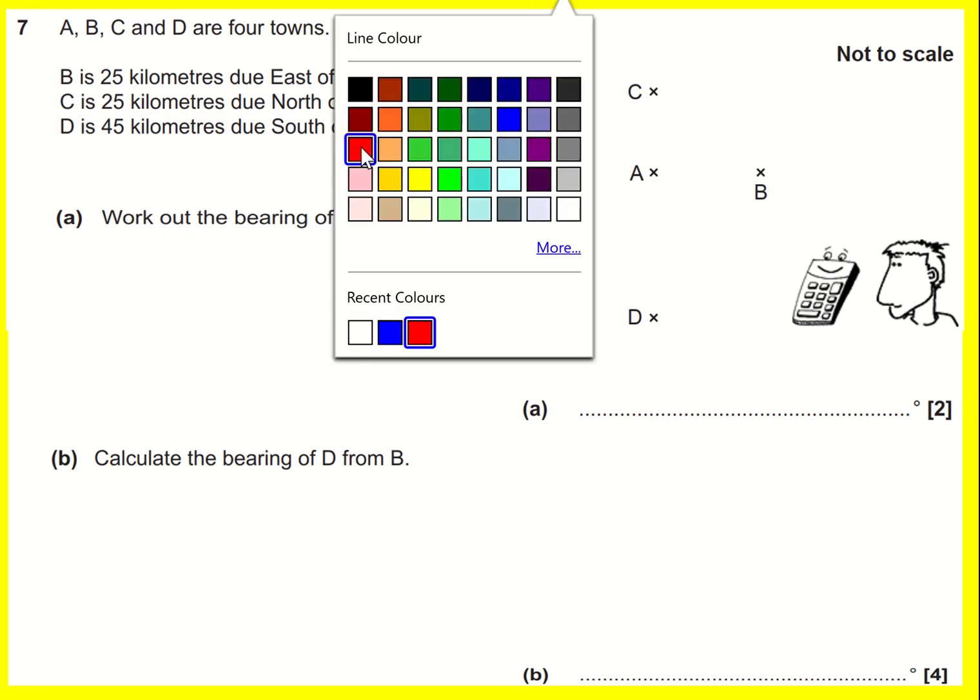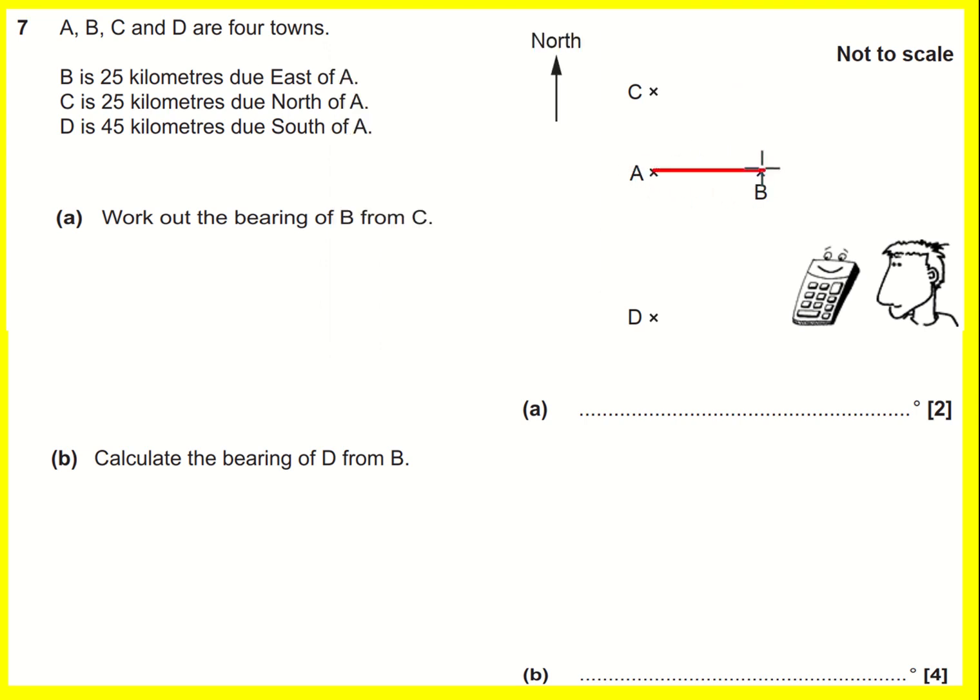The first thing I'm going to do is label the diagram a bit more clearly. B is 25 kilometers due east of A, and C is due north, so I'm just going to connect them up. D is 45 kilometers due south. So 25, 25, 45, and this is a right angle.